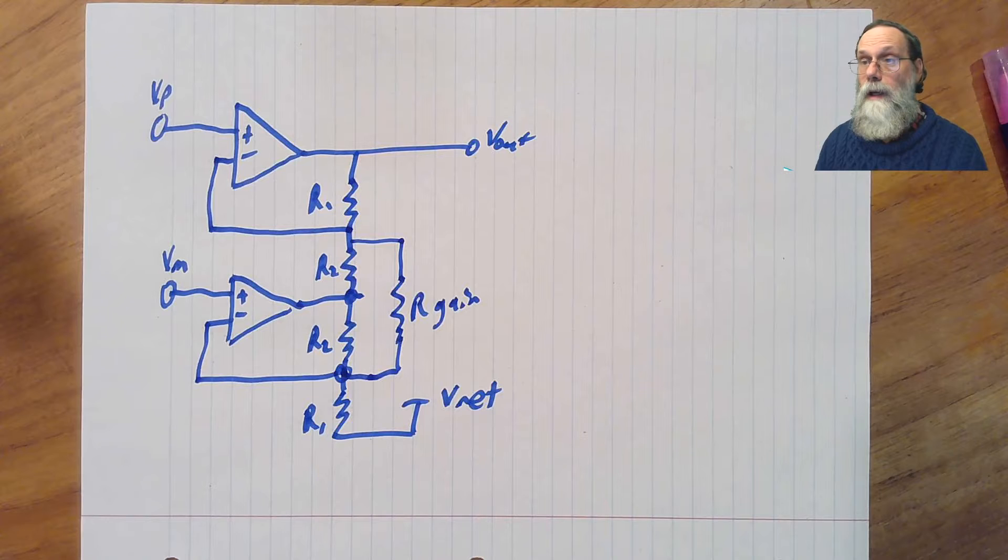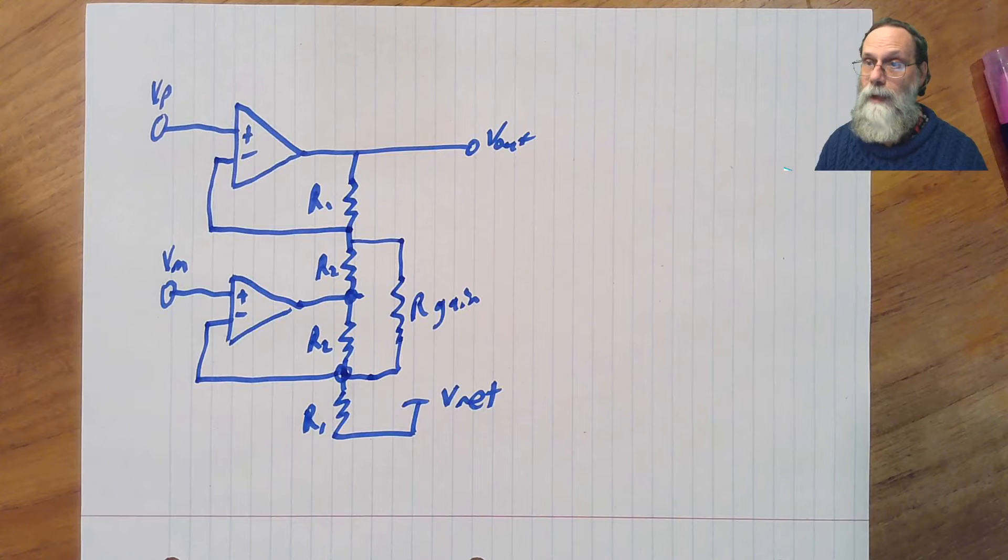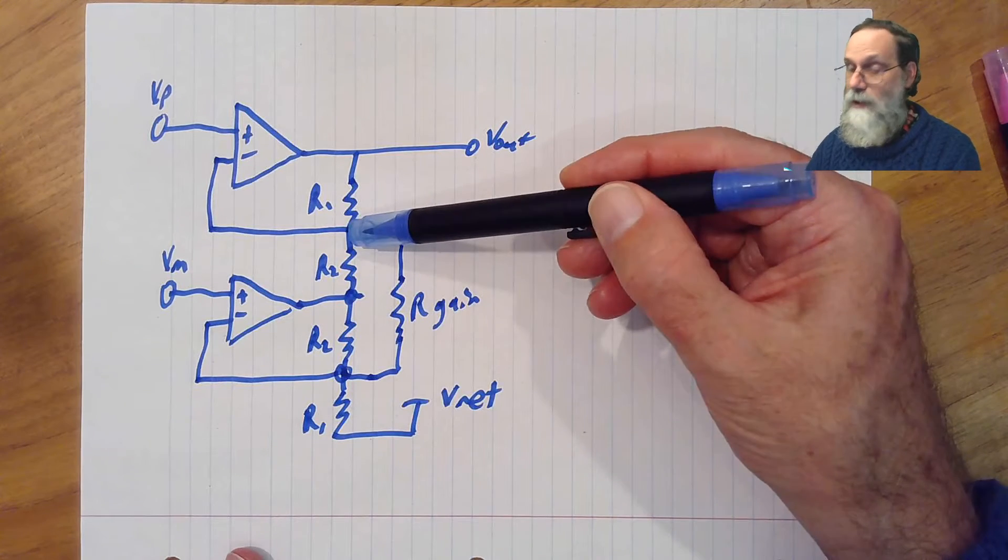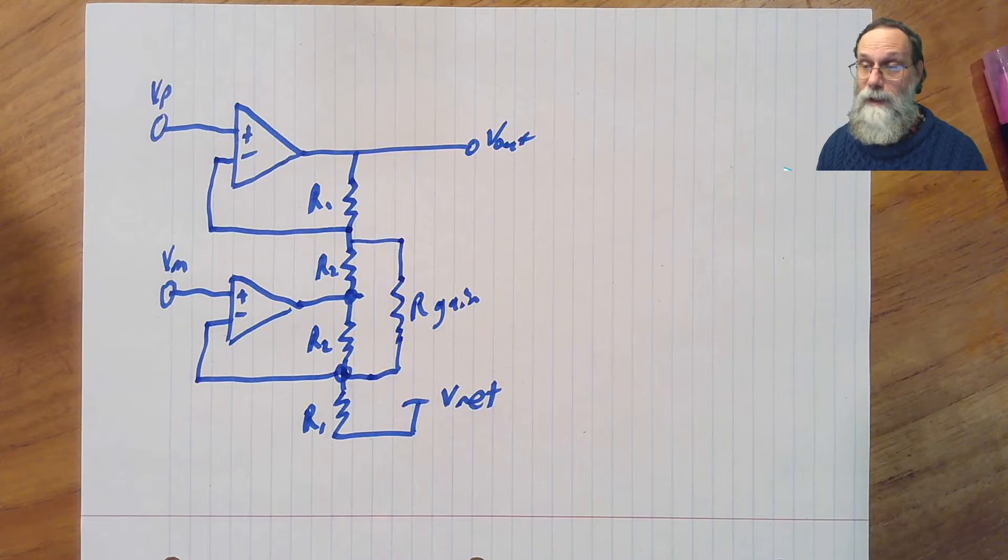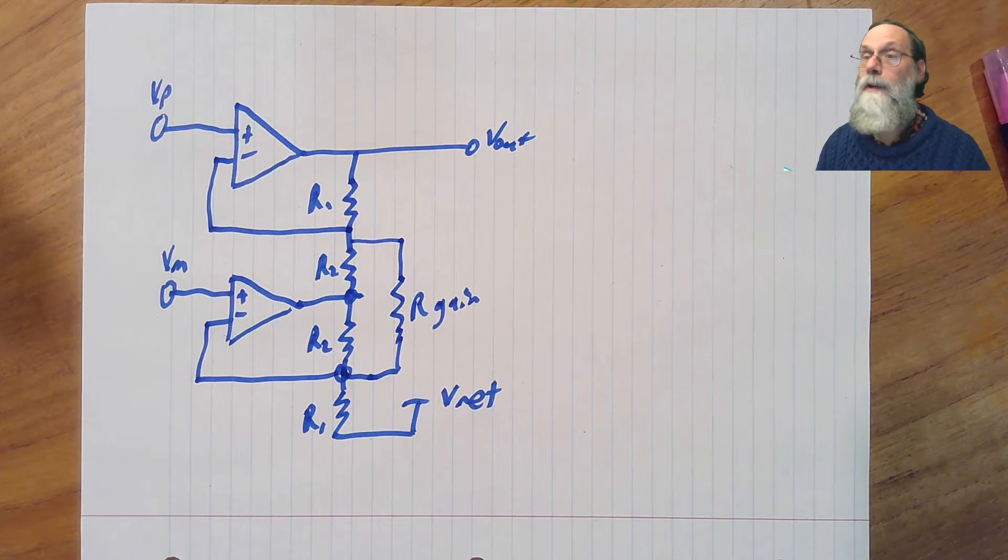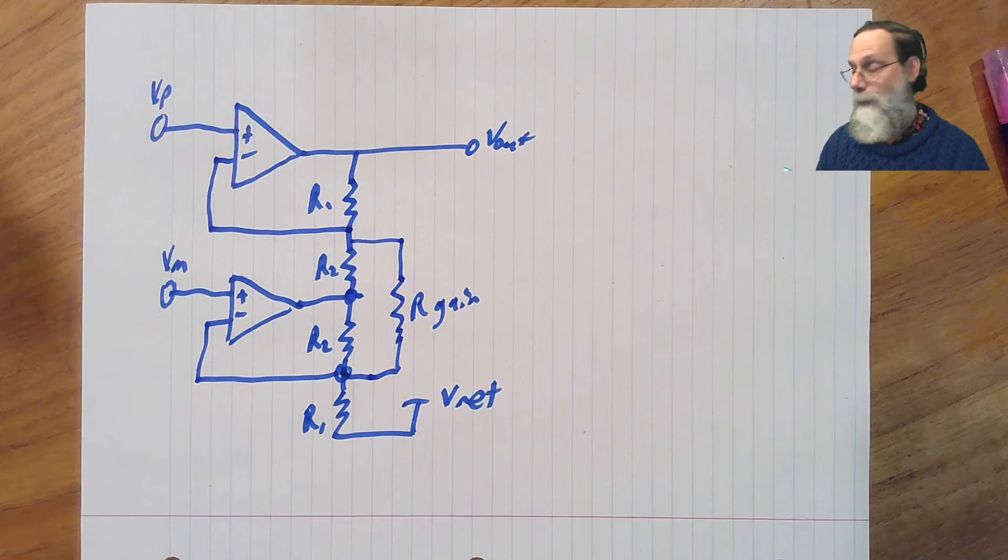This is our circuit. How do we analyze it? Unfortunately, we can't just use simple voltage dividers, because this node here, this node here, we've got three resistors coming together, and there's current through all three of those resistors, so it's not going to be a simple voltage divider which can only have two resistors with current through them.